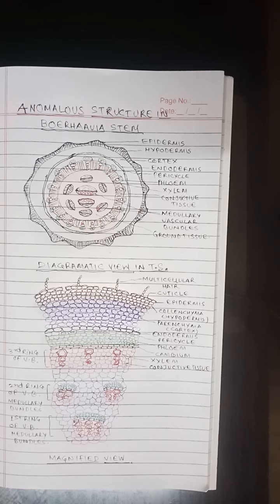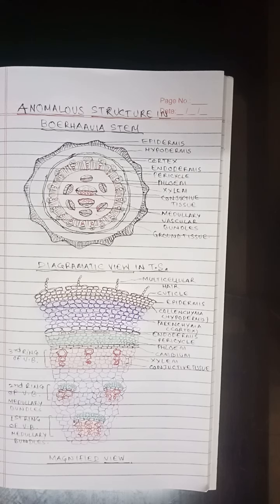The inner two rings of bundles are medullary while the outermost ring is normal. This is an anomaly in contrast to the presence of a single ring of vascular bundles in a typical dicot. Generally in dicot there is only a single ring of vascular bundles, but in Boragia the vascular bundles are arranged in three rings. This is the anomalous structure.